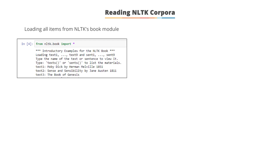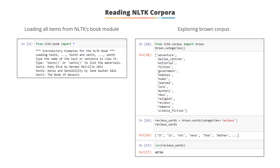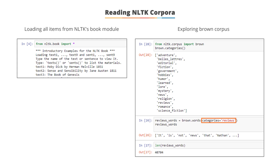To read a specific module from NLTK corpora, use the asterisk symbol with the module name. Enter 'from nltk.book import *' to load all items available in NLTK's book module. To explore the Brown corpus, enter 'from nltk.corpus import brown', then 'brown.categories()' to load different genres. Select a genre and assign it to a variable using: variable_name = brown.words(categories='genre_name'). Then enter the variable name to see available words.